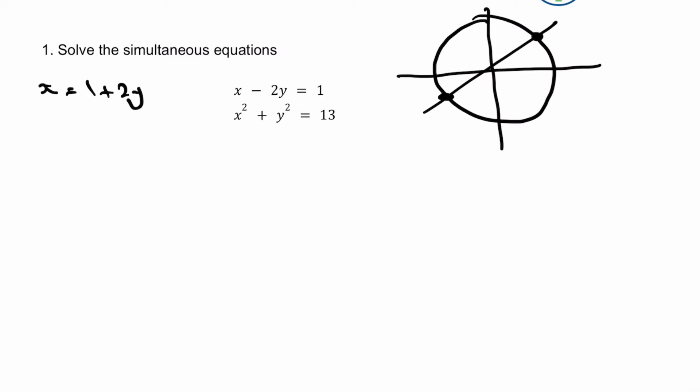And what it allows me to do is to take that value of x and substitute it directly into my other equation. So what effectively I get is rather than writing x squared, I'm going to write 1 plus 2y squared plus y squared equals 13.